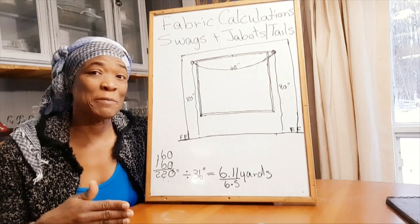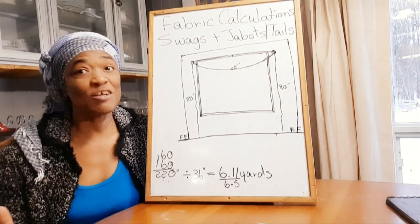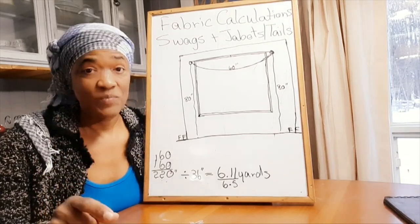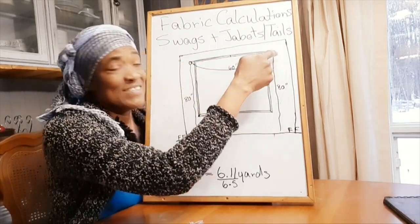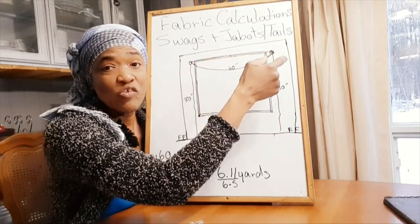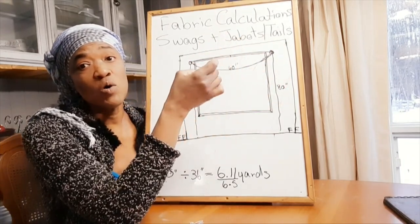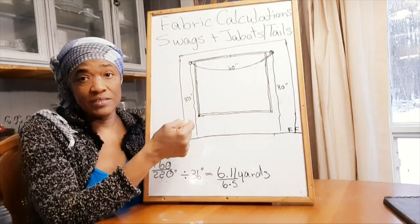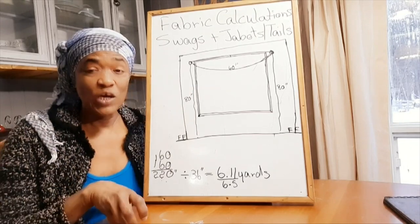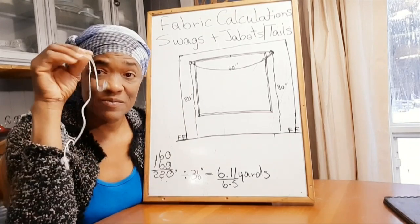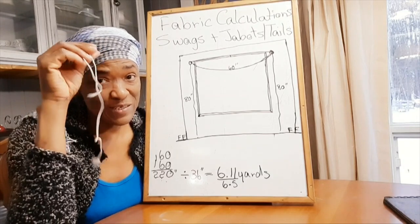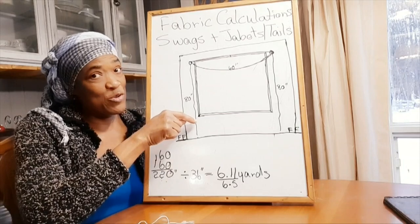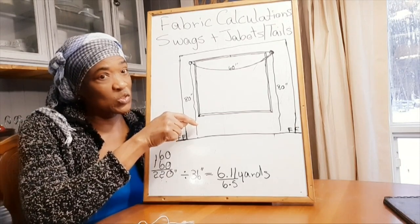Now it's going to be like one, two, three, calculate, you're done. Number one: install your brackets on your window or on your wall wherever you want your swag to be installed. Number two: get yourself a piece of string, a nice pliable piece of string, and string from where you want your jabot to start.